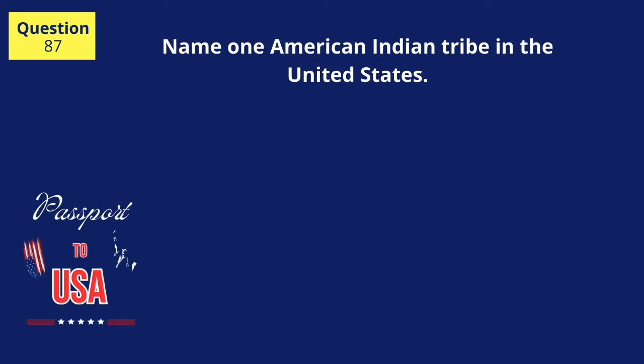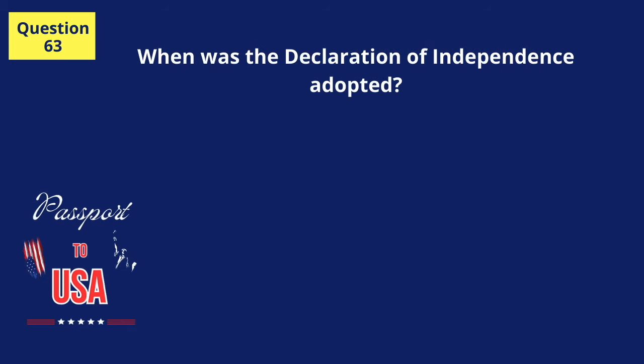Name one American Indian tribe in the United States. Cherokee. When was the Declaration of Independence adopted? July 4, 1776.